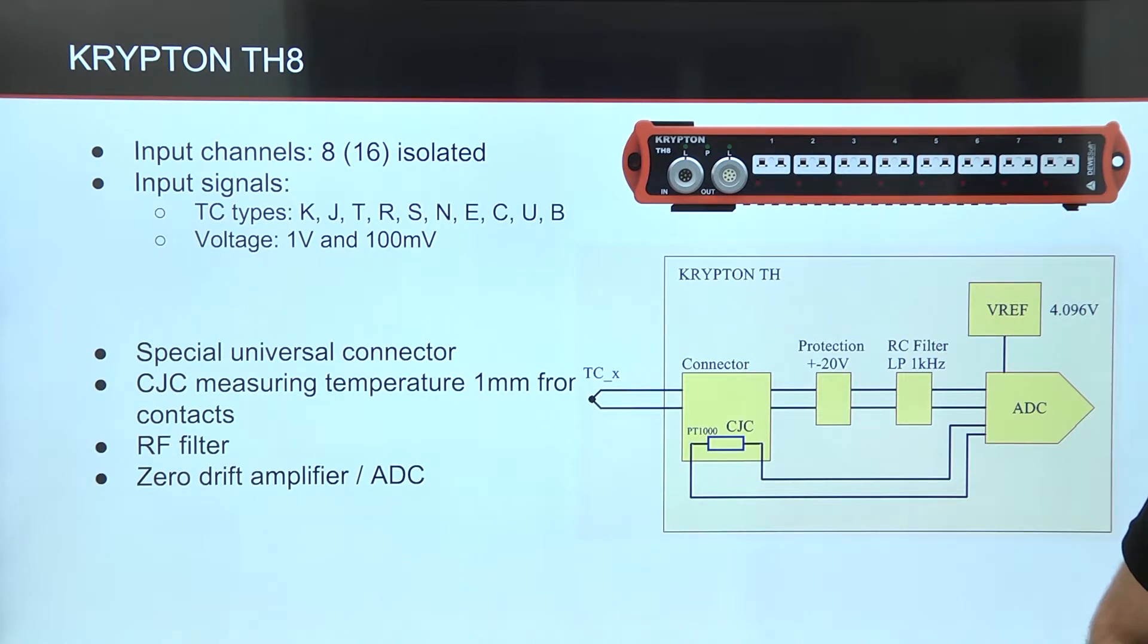It has eight channels designed like this on the block diagram. The connector is universal type, meaning you can connect any type of thermocouple cable. Modification of the connector is done in a way that the PT1000 for measuring the temperature of cold junction is just one millimeter from contacts. Measured voltage goes through protection circuit, RF filter, and to AD converter. Data from AD converter is read by microprocessor which then calculates temperature from measured data and sends it over EtherCAT bus.